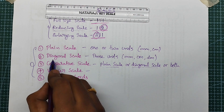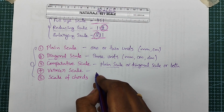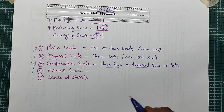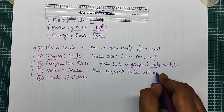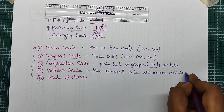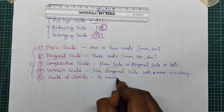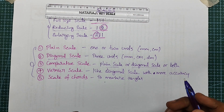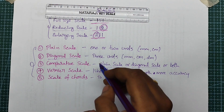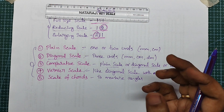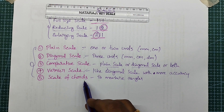Vernier Scale is similar to Diagonal Scale and reads 3 units. Scale of Chords is used to measure angles, while the other four types are used to measure length. We will explain all five scales and solve three or four problems.